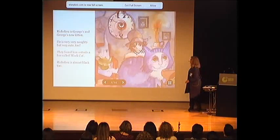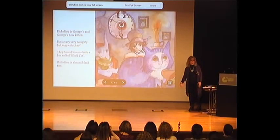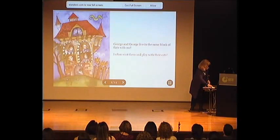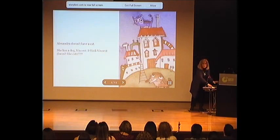This is a story about my friends and their pets — Richelieu is George's new kitten. He's very naughty but very cute; they found him outside a bar called Black Cat. Richelieu is almost black too, and George lives in the same block of flats as me. So this is a story about cats and dogs and the pets of my friends. All the art was found online — I didn't have to draw anything.